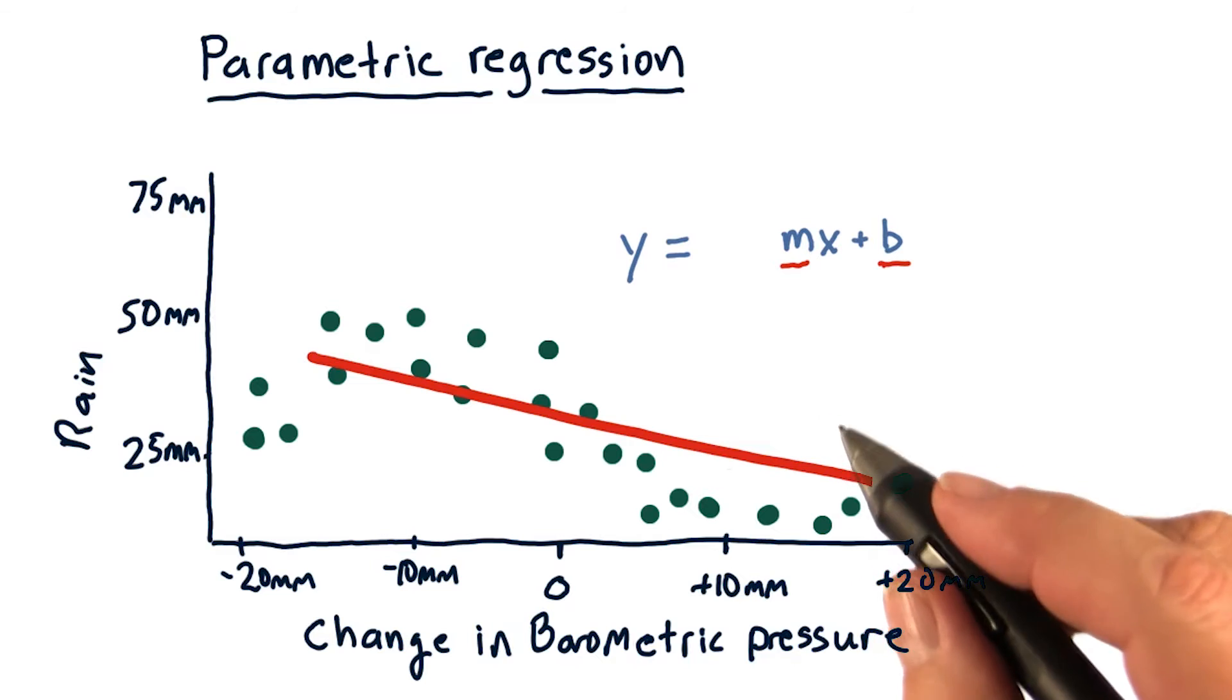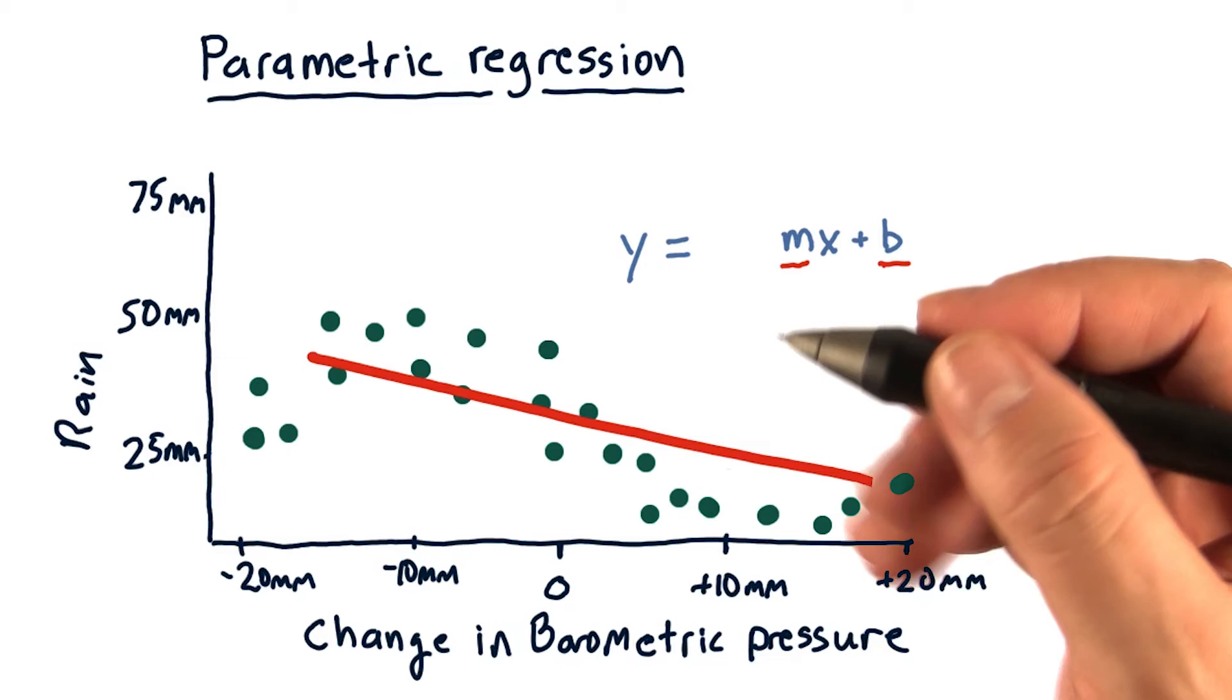If we want to estimate or query how much it's going to rain at any particular point, we measure the barometric pressure.